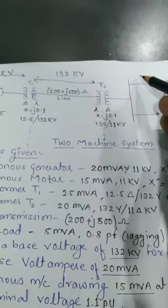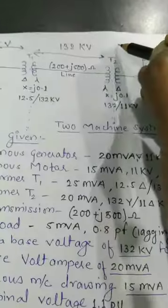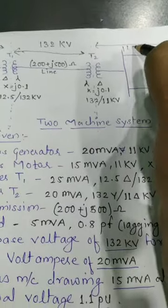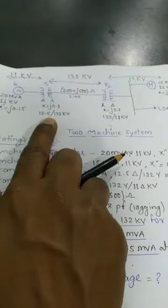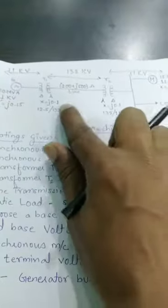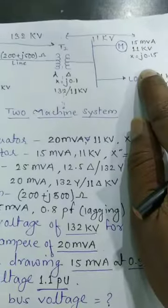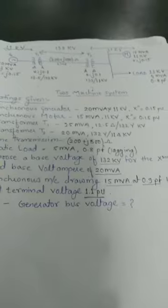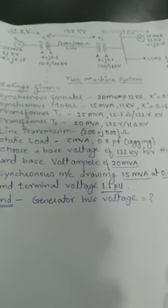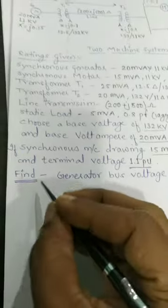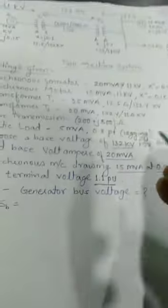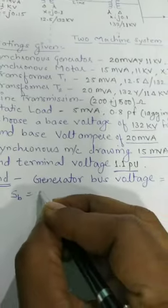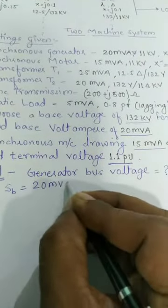For the load side it is again 11 kV. So there are three sections: section one consists of generator and T1 primary at 11 kV; section two is the transmission line at 132 kV; and section three is the load side at 11 kV. The base MVA chosen for this numerical is 20 MVA.